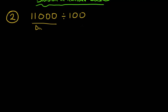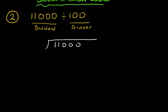For the next example, the dividend is '11000' and the divisor is '100'. Let's do this. We take the first three digits: '110'. '110' compared to '100' — obviously bigger, so I put one on top. One times '100' gives '100'. I subtract: zero minus zero is zero, one minus zero is one, one minus one is zero. Result is '010'.